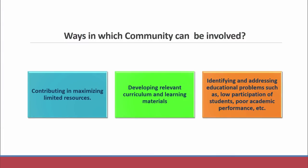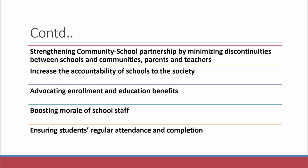Identifying and addressing educational problems such as low participation of students and poor academic performance: community members can help by moving from one home to another to identify and address education problems faced by community members — why students are not participating, why attendance is low, why academic performance is unsatisfactory. Community members can also strengthen school-community partnerships by minimizing discontinuities between school and community, and it is very important for school and community to remain in direct contact.